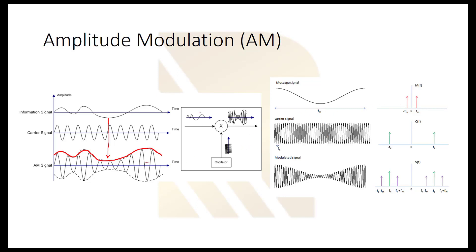Imagine we are trying to modulate a cosine: the message signal is cos(2π·FM·t). We modulate this with a carrier of frequency cos(2π·FC·t), where FM is a low frequency, lower than FC. At the output we get this spectrum — components coming from the DC value plus sidebands. At the input and for the carrier we only have one delta component, but at the output we have three. This means we are increasing the bandwidth at the output; we will have higher bandwidth than the original signal.